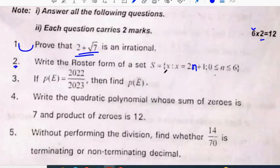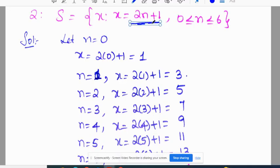Write the rooster form of set S is equal to X such that X is equal to 2N plus 1, where 0 is less than or equal to N, less than or equal to 6. This is in set builder form. We need to convert into the rooster form. X is equal to 2N plus 1. Condition is 0 is less than or equal to N, less than or equal to 6. So we have to take 0 in the place of N.